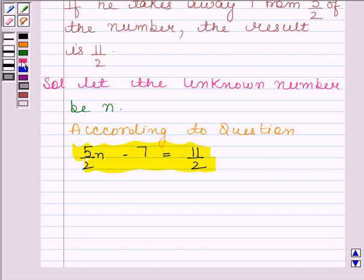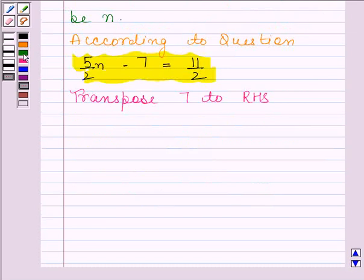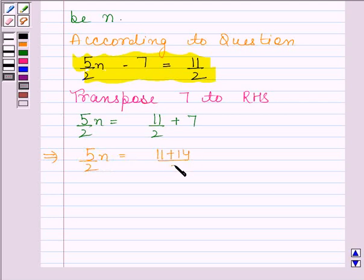Let's solve this equation. We will first transpose 7 to the right side. Thus, we get 5 by 2 N equals 11 by 2 plus 7. This implies 5 by 2 N is equal to 11 plus 14 divided by 2.